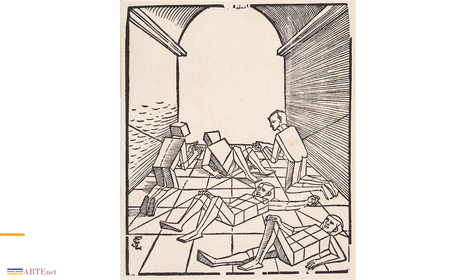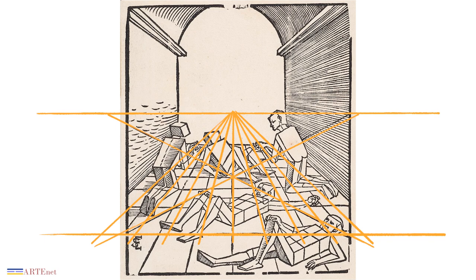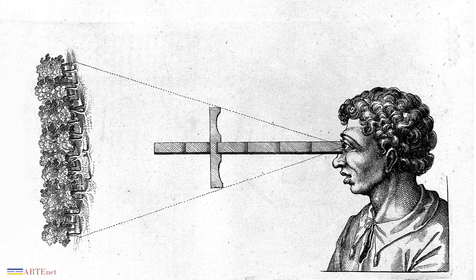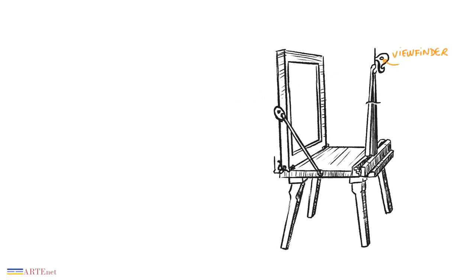The problem of correctly reproducing a three-dimensional figure had fundamental importance in the history of Western figurative arts, especially between the 15th and 18th centuries. Parallel to the study of perspective, since the 15th century, painters began using different instruments in order to check measurements and to have assistance in drawing three-dimensional figures.